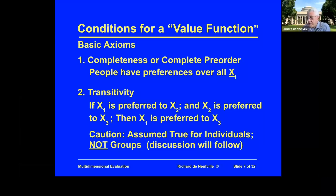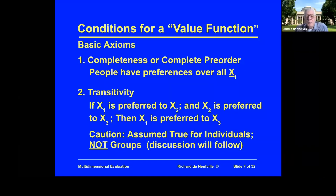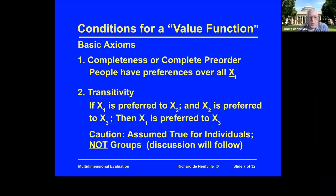The second axiom is transitivity: if thing x1 is preferred to thing x2, and x2 is preferred to x3, then the preference is transitive — x1 is better than x2, which is better than x3, therefore x1 is preferred to x3.